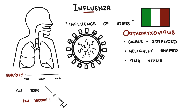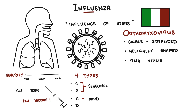Influenza viruses are categorized into four types: A, B, C, and D. Types A and B lead to the seasonal flu epidemics we see each winter, while type A viruses can also cause pandemics — global outbreaks of the disease. Unlike A and B, type C results in mild illness and doesn't spark epidemics. Type D affects cattle and is not a concern for human health.